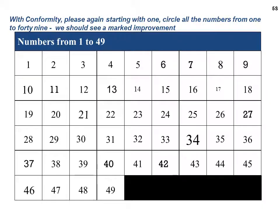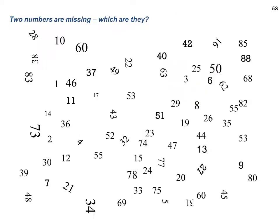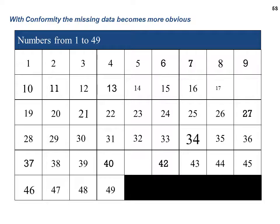However, if you take it one more step — going to conformity — and you try to circle all the numbers, you'd see a marked improvement. You can really zip across very, very fast. But if you hadn't done this job, if you hadn't moved to conformity, and we took two numbers away — incredibly difficult to spot in any reasonable length of time. If we go back to conformity, the missing numbers immediately become obvious: 18 and 41.